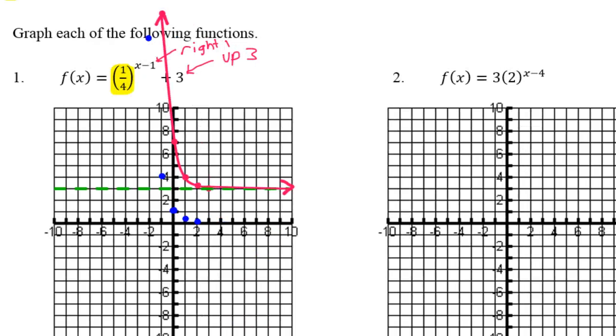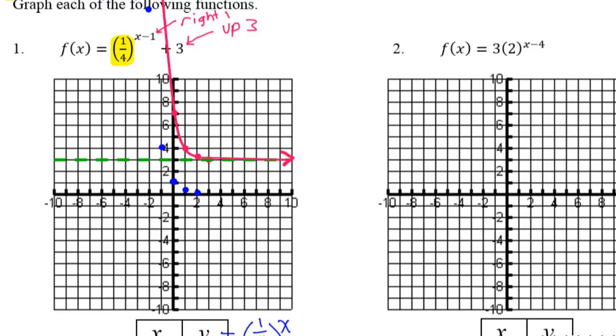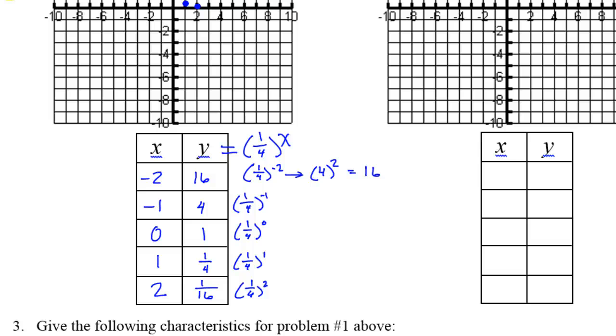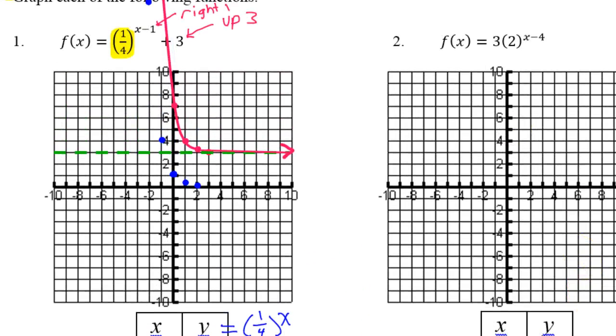Let's slide over and look at problem number 2, which we will do in the exact same way. Again, we will use the same x values that we always use, which will be negative 2, negative 1, 0, 1, and 2. Just like before, we're going to start off by looking at the parent function. See that 2? I'm going to ignore the 3 and the minus 4 for now. So for now I'm just going to be looking at 2 to the x power, like y equals 2 to the x power.